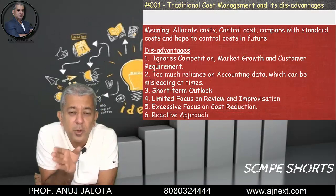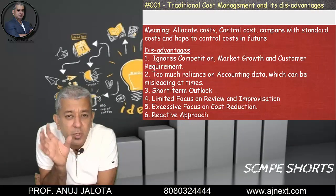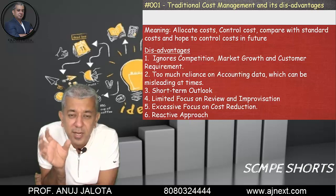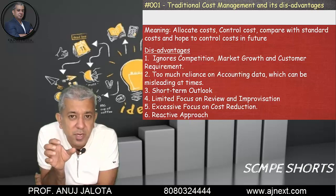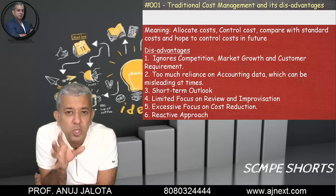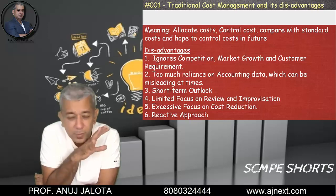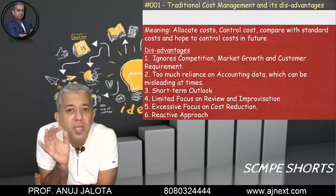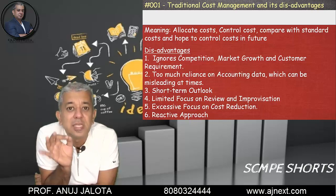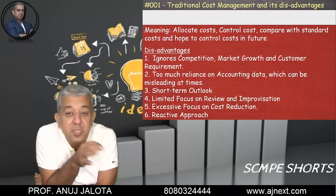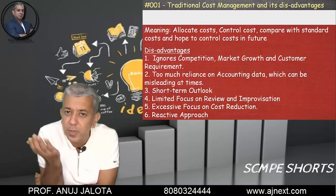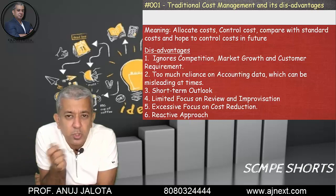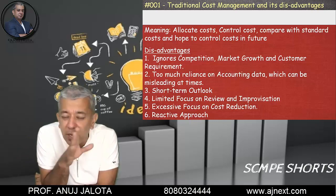Second disadvantage: too much reliance on accounting data. Traditional cost management always tries to find out the cost using absorption costing — allocation, apportionment, reapportionment. But that's not the correct way, because that accounting ultimately leads to disastrous business decisions. You will see in questions also that we completely ignore accounting data — it's useless.